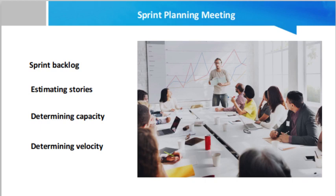Next is determining the capacity. Your team's capacity is a measurement of how many story points or backlog items they can complete during a sprint under normal circumstances. To find your team's capacity, multiply the number of team members by the number of hours they can productively work in a day, subtracting time spent in team meetings or devoted to other tasks or projects.